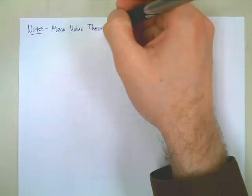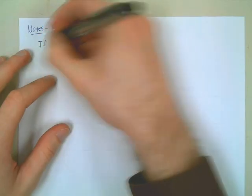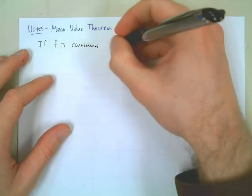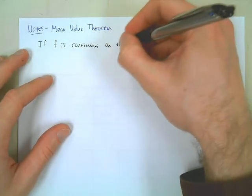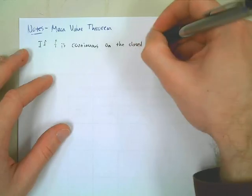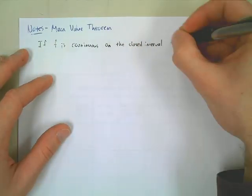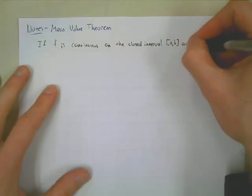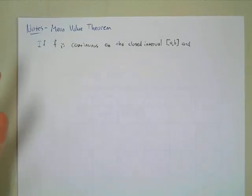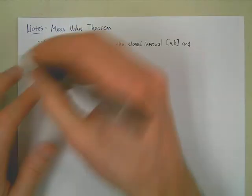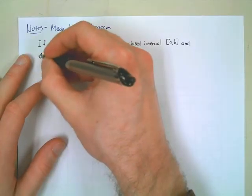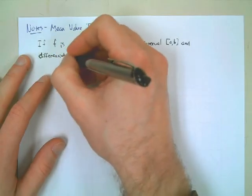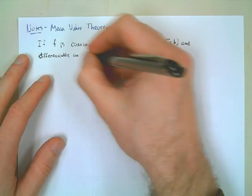The conditions for the mean value theorem, not unlike Rolle's Theorem: we start with if F is continuous on the closed interval [A, B]. And if it's continuous on the closed interval, we also need to say it's differentiable on the open interval (A, B). Those two things kind of go hand in hand when we talk about our important theorems — continuous on the closed interval and differentiable on the open interval.